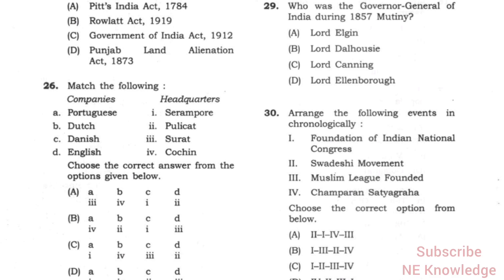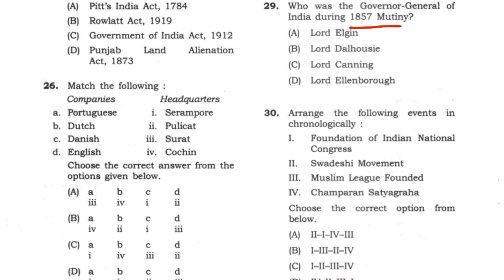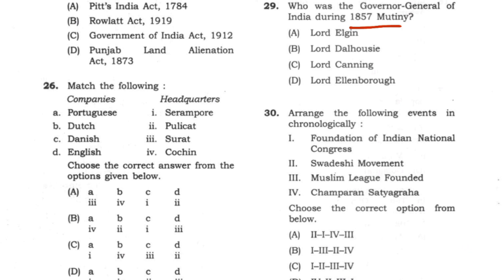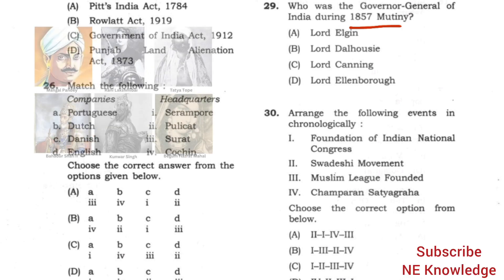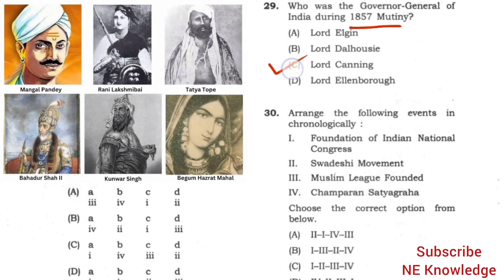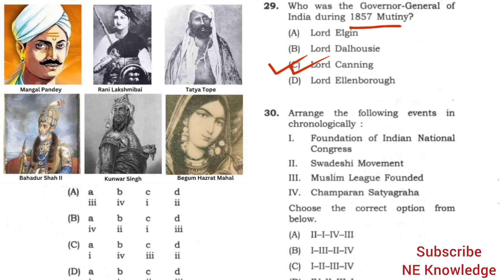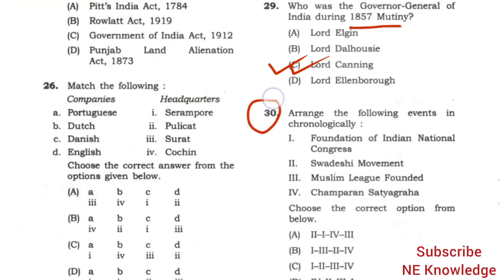Question 29: Who was the Governor General of India during the 1857 Mutiny? Answer: Lord Canning. Option C, number 2.